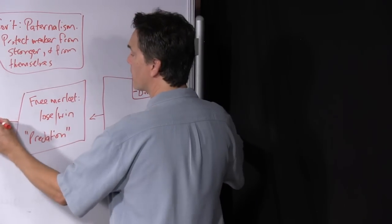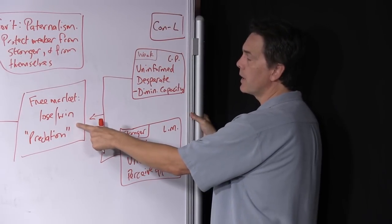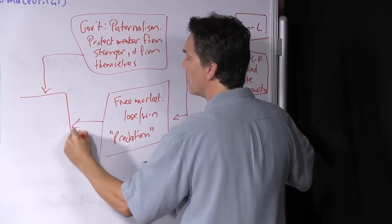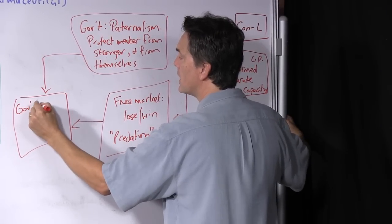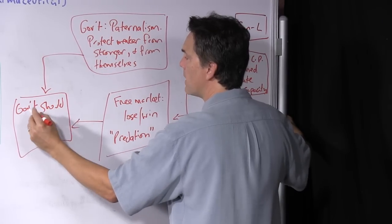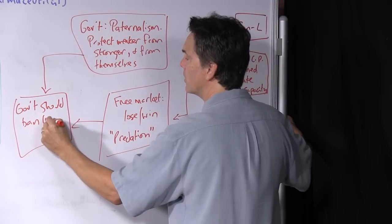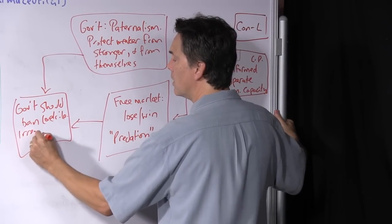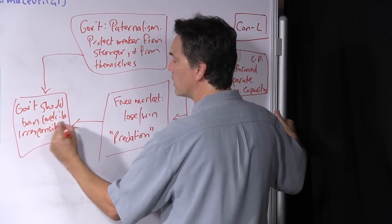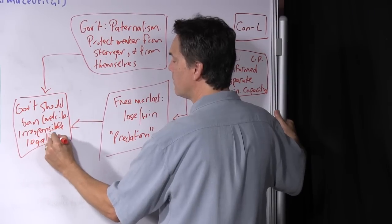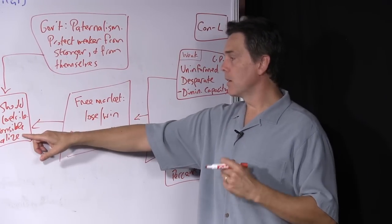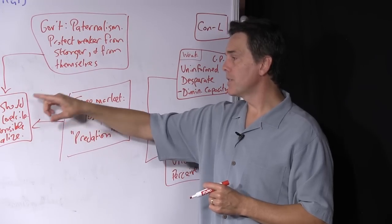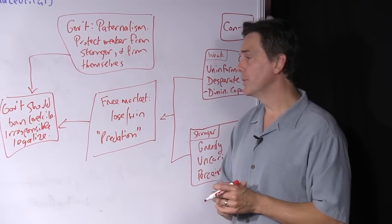So what we then do is say if the free market is going to yield these lose-win predatory results, and we believe that the government should use its power in a paternalistic fashion, that leads to a particular regulation that what should occur in this case here is the government should use its power to ban laetrile. And the flip side of that also holds that it would be irresponsible of the government to leave it legal or to legalize it. It would not be acting paternalistically appropriately if it left this product that it didn't believe work on the market. And so it has the moral justification to use its political power to ban laetrile.